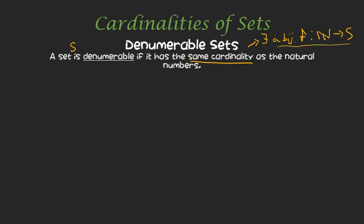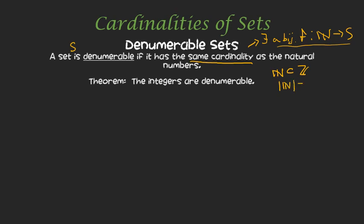A set S is denumerable if we can produce a bijective function. That's how the first proof will work — the theorem that the integers are denumerable. Even though the natural numbers are a proper subset of the integers, they are still the same size. They have the same cardinality; that is, there's a bijective function between the natural numbers and the integers. And remember, that is our definition of same cardinality. So let's talk about a proof sketch here.